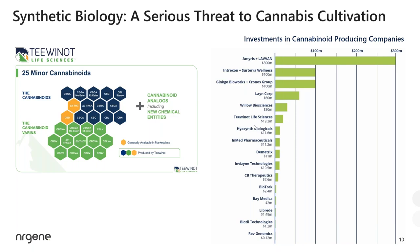Not only that, there's also an entirely new field of competition called synthetic biology or semi-synthetic biology. This is a partial list of companies who've raised about a billion dollars over the last year and a half to produce cannabinoids outside of the plant. The leader of the team is Tewinot — they announced a few months ago that they're actually selling kilo quantities commercially of CBD and THC. They claim to produce a lot of other cannabinoids as well. This is a highly pure product that will be used in the pharma industry as an API — active pharmaceutical ingredient.